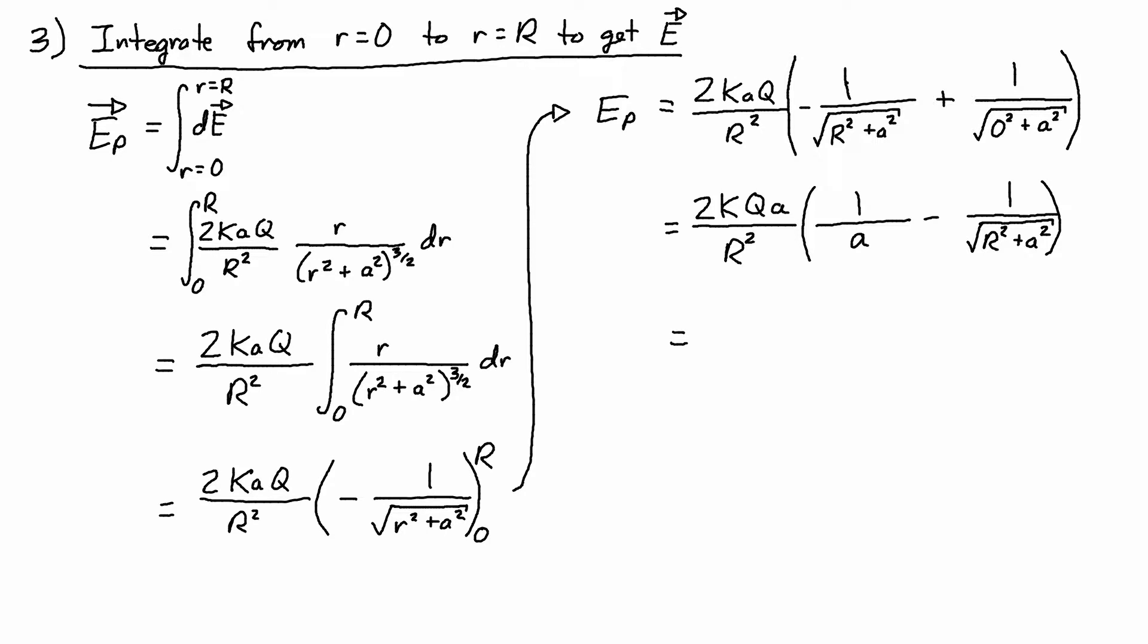So the next step is to multiply the a inside the brackets. So I get 2kq over r squared times a over a minus a over the square root of r squared plus a squared. And then the a over a simplifies down to 1, so I have 1 minus a over r squared plus the square root of r squared plus a squared.